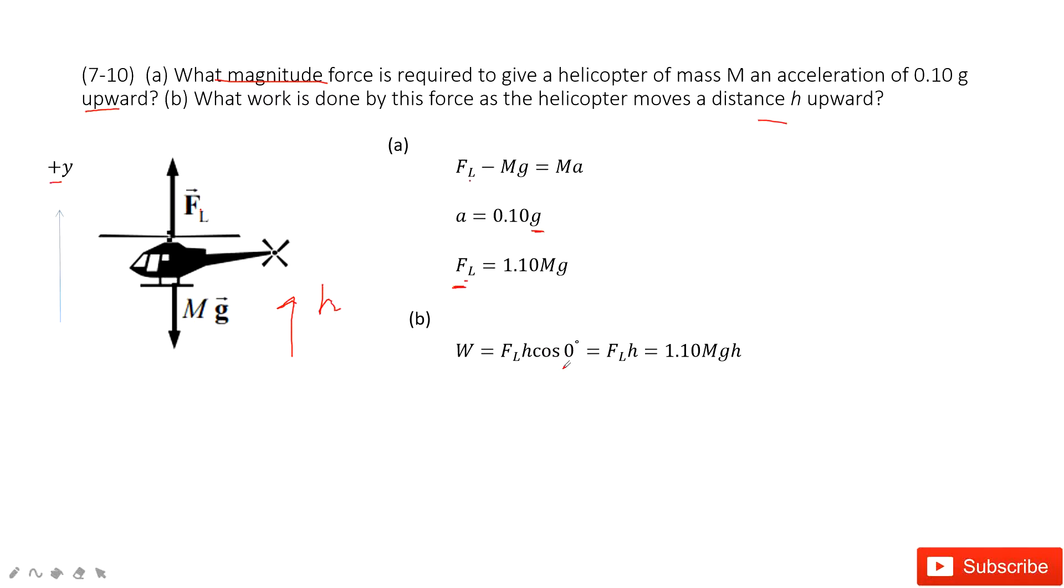Cosine 0 becomes 1, right? So the work becomes Fl times h. Input Fl, we get the final answer.